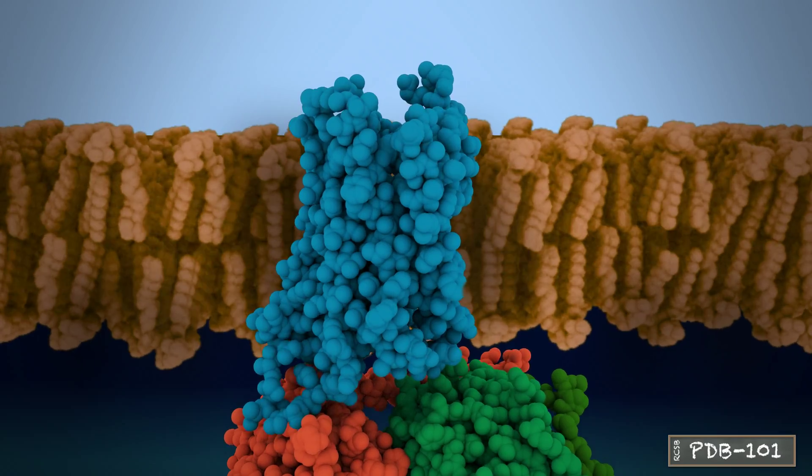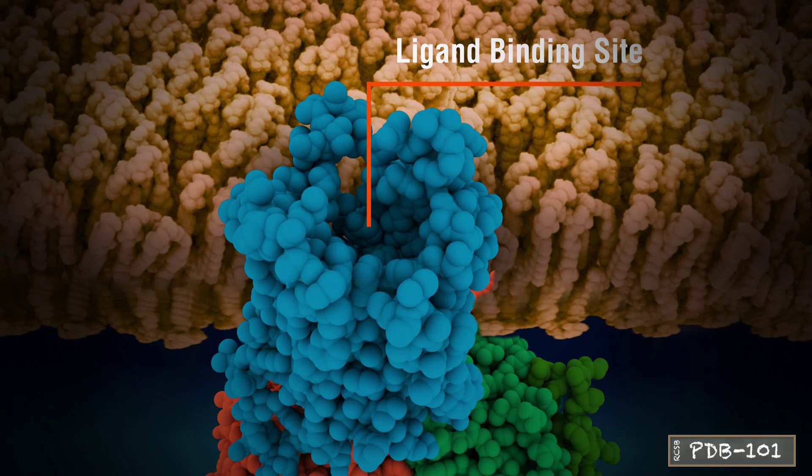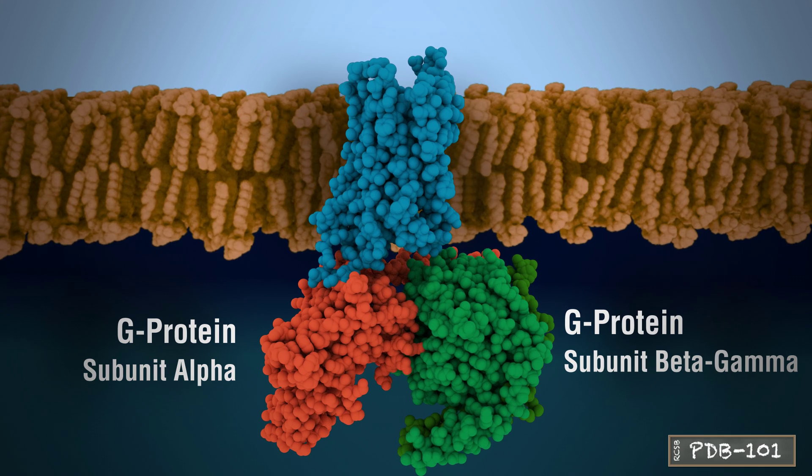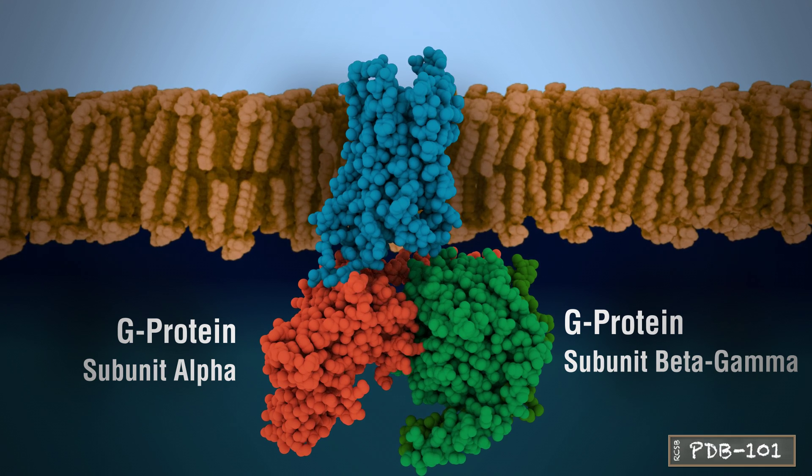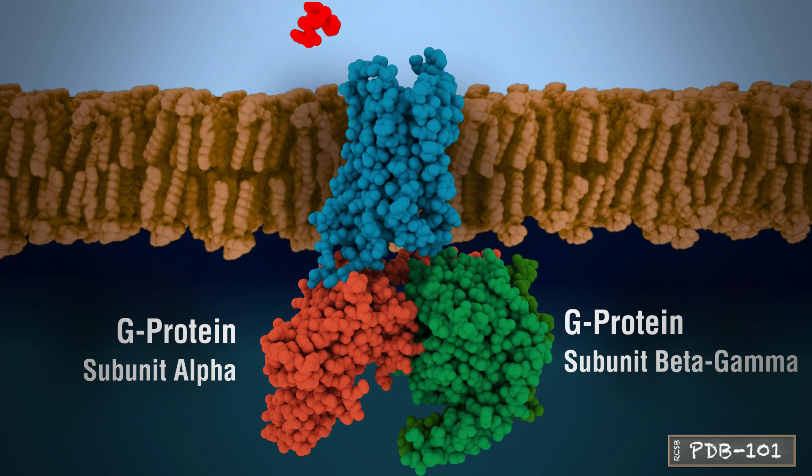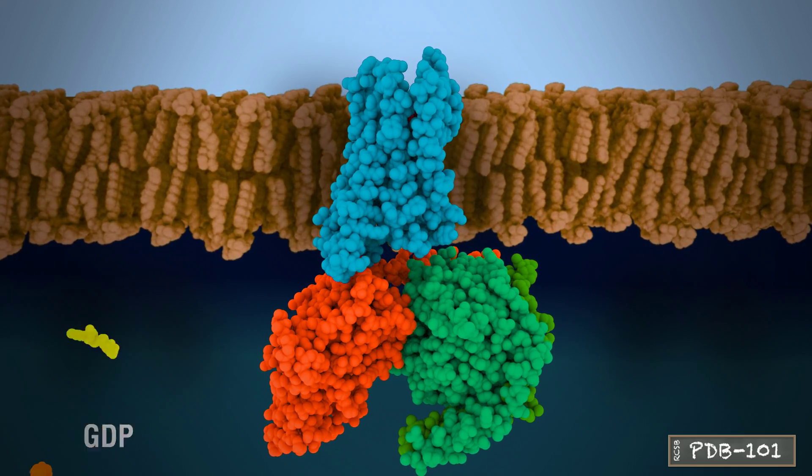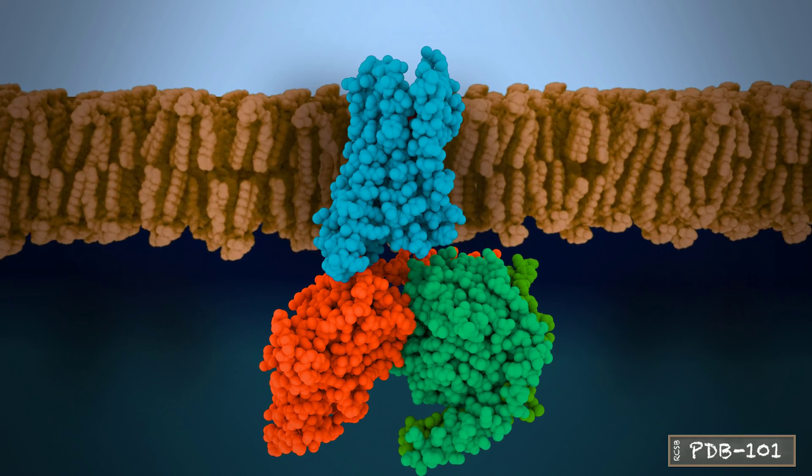On the extracellular side, the helices form a cavity where ligands such as endorphins, morphine, or serotonin bind. On the intracellular side, the receptor is coupled to G-protein. When the receptor is activated by a ligand, the G-protein splits in two parts, which then activate other proteins in the internal signal transduction pathways.